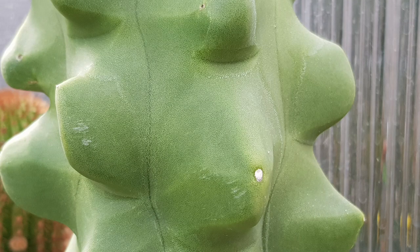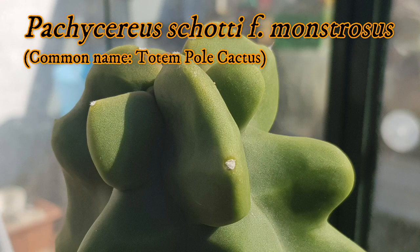A monstrose mutation would be a form that has even more distortion than a crested mutation. It usually involves all of the meristematic tissue in a plant and results in club-like or cylindrical shapes and uneven surfaces. You would recognize for instance Pachycereus schottii forma monstrosus, and there are quite a few other cacti that have these monstrose forms.